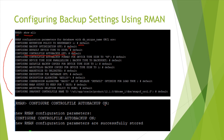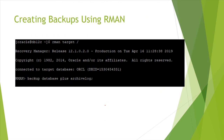To enable control file autobackup, run the command: 'configure controlfile autobackup on'. This changes it from off to on. For more information about backup settings, you can refer to Oracle documentation or attend backup and recovery training. You can take a backup using RMAN or Cloud Control — Cloud Control submits RMAN commands behind the scenes.